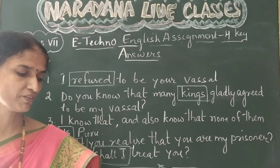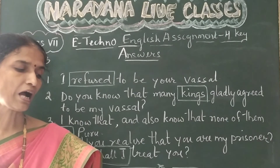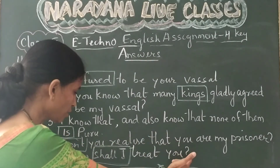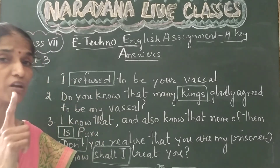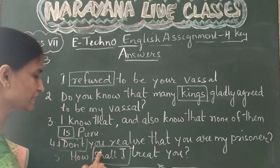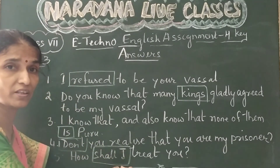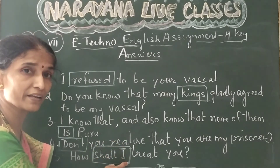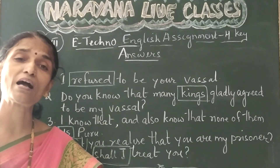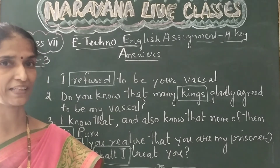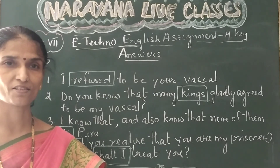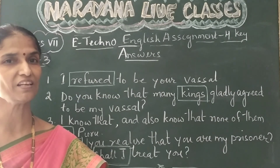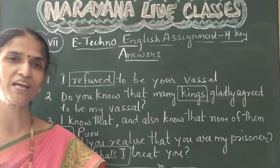Now the last sentence, the fifth one: 'How I shall treat you?' It's a question. A question should always have the verb before the subject, so we change the word order — 'I shall' should be changed to 'shall I.' The corrected sentence is: 'How shall I treat you?' So we corrected five sentences here. That was today's key. Thank you children. Have a good day.